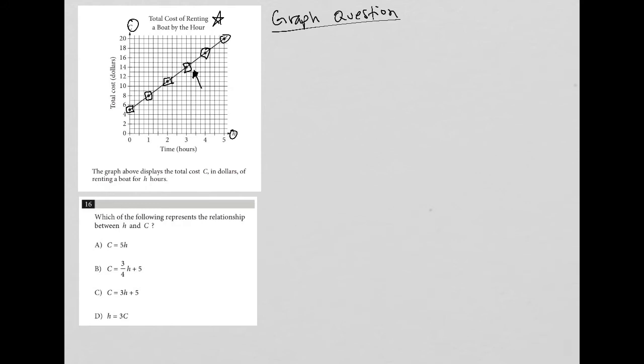So let's see how that works. So the one that I just pointed an arrow towards, that's the ordered pair 3 comma 14, right? Because h is 3 and c is 14. So the equation that fits should be the equation in which when I plug in h equals 3, I get c equals 14 as an answer.